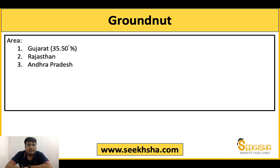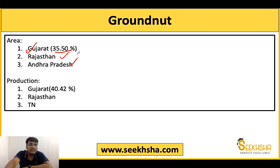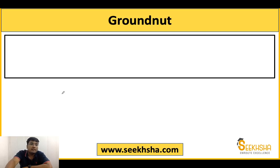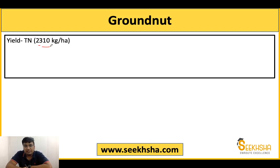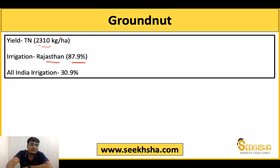Moving to groundnut: the area is highest in Gujarat at 35.50%, followed by Rajasthan in 2nd and Andhra Pradesh in 3rd. In production, Gujarat is again 1st, Rajasthan 2nd, and Tamil Nadu replaces Andhra Pradesh in 3rd. Gujarat produces 40.42% of the country's groundnut. For yield, Tamil Nadu again has the highest at 2310 kg per hectare. Irrigation is highest in Rajasthan at 87.9%, and the All India groundnut irrigation is 30.9%.